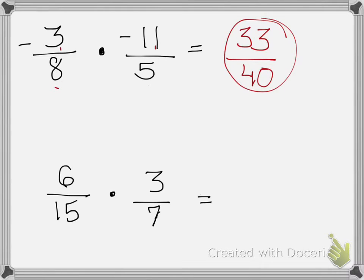Last example. Looking at a diagonal from each other. 6 and 7. Nothing divides into those two. What about 15 and 3? Yep! 3 can divide into 3 one time. 3 can divide into 15 five times. So we're now multiplying 6 over 5 times 1 over 7. So 6 times 1 gives me 6, 5 times 7 gives me 35.